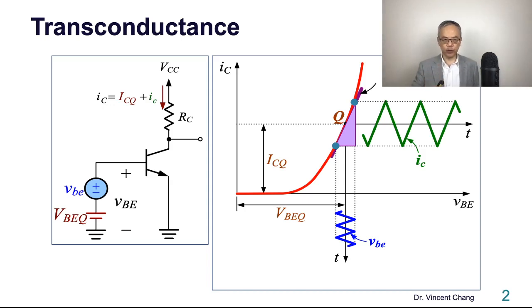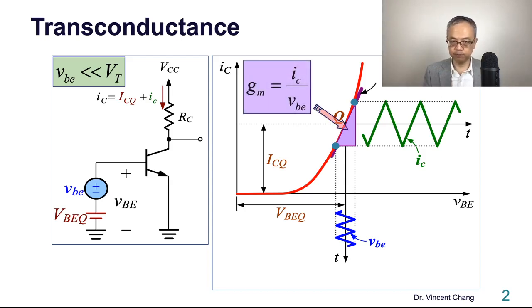Let's quickly review the definition of transconductance. The first small signal approximation is much smaller than the thermal voltage. The AC input voltage VV is much smaller than the thermal voltage. So under this condition, the exponential IV curve around the Q point can be approximated as a straight line.